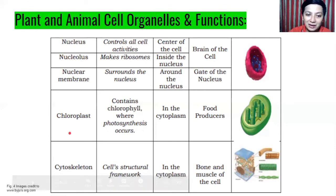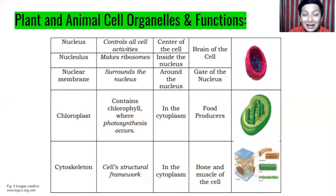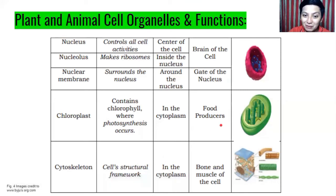Next, we have chloroplast. Chloroplast contains chlorophyll where photosynthesis occurs. This is where the green pigment or green color of plants comes from — because of the chloroplast. This is where photosynthesis happens. Photosynthesis is the process where plants make their own food. Chloroplast is located in the cytoplasm and is the food producer of the plants.